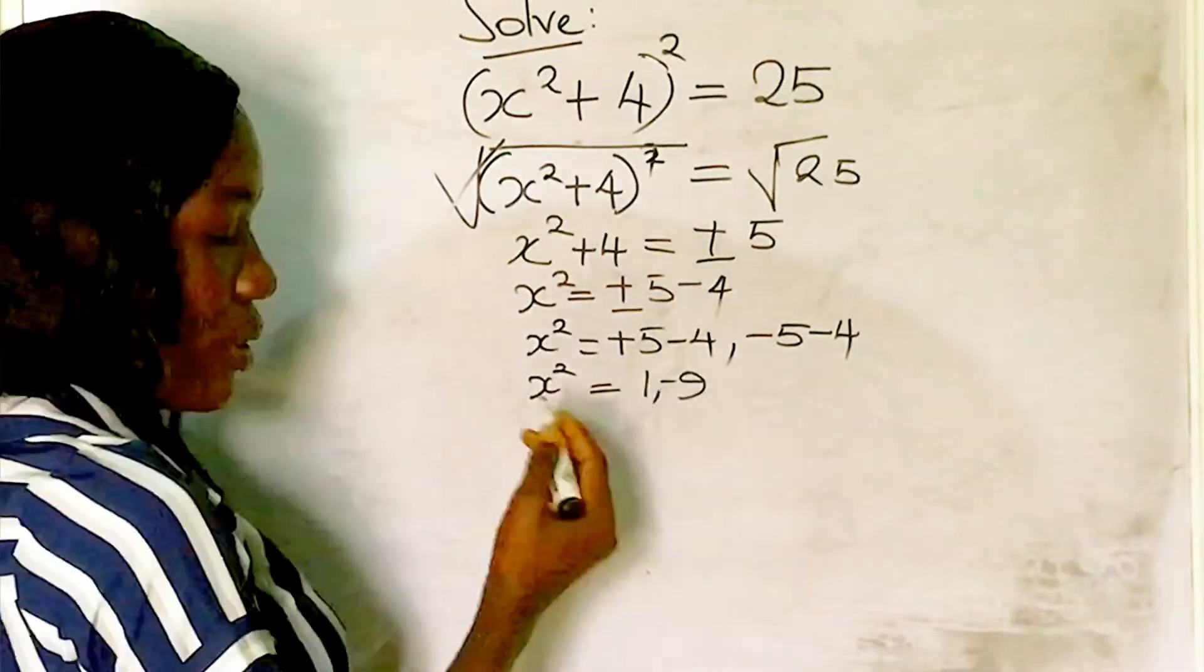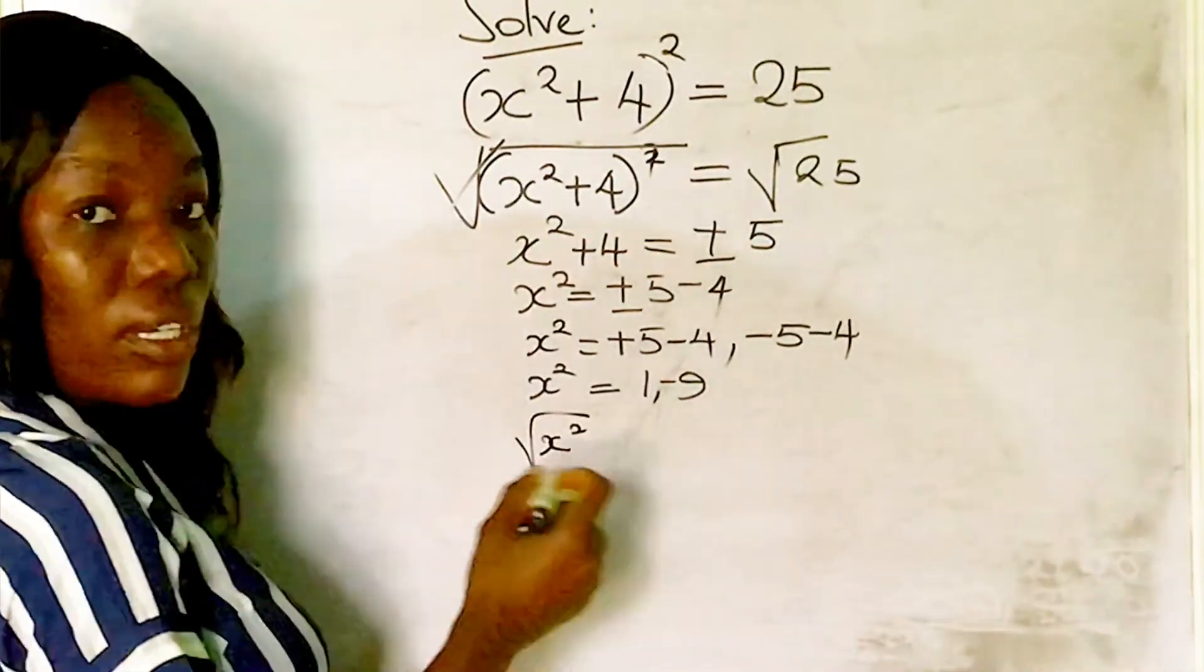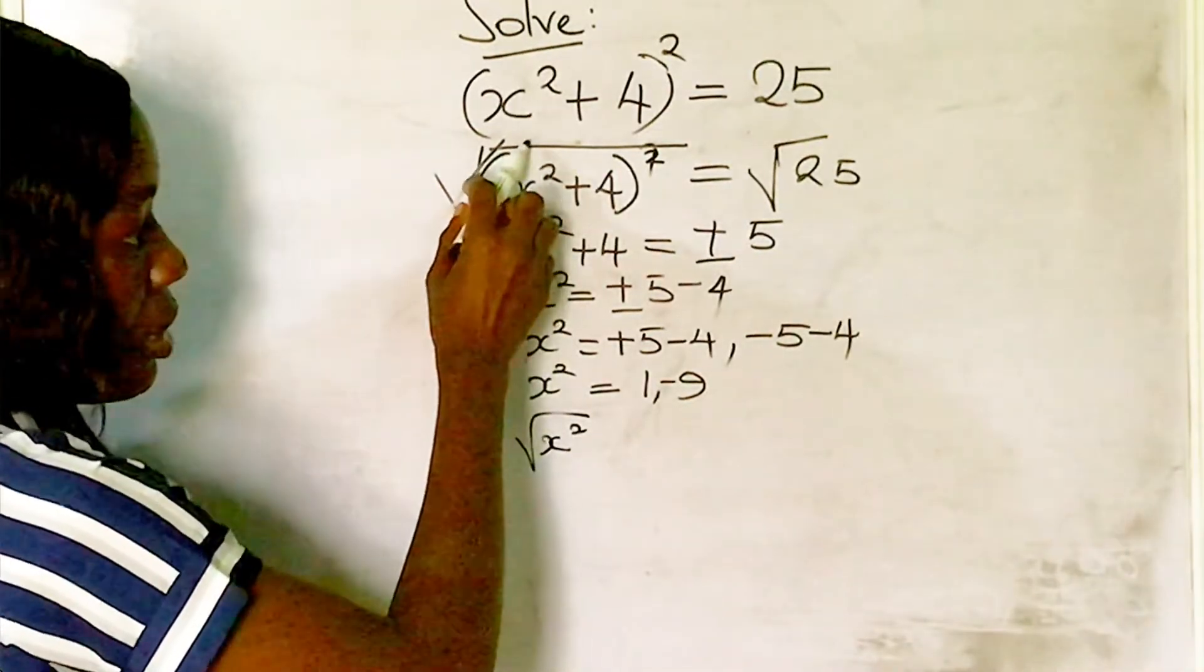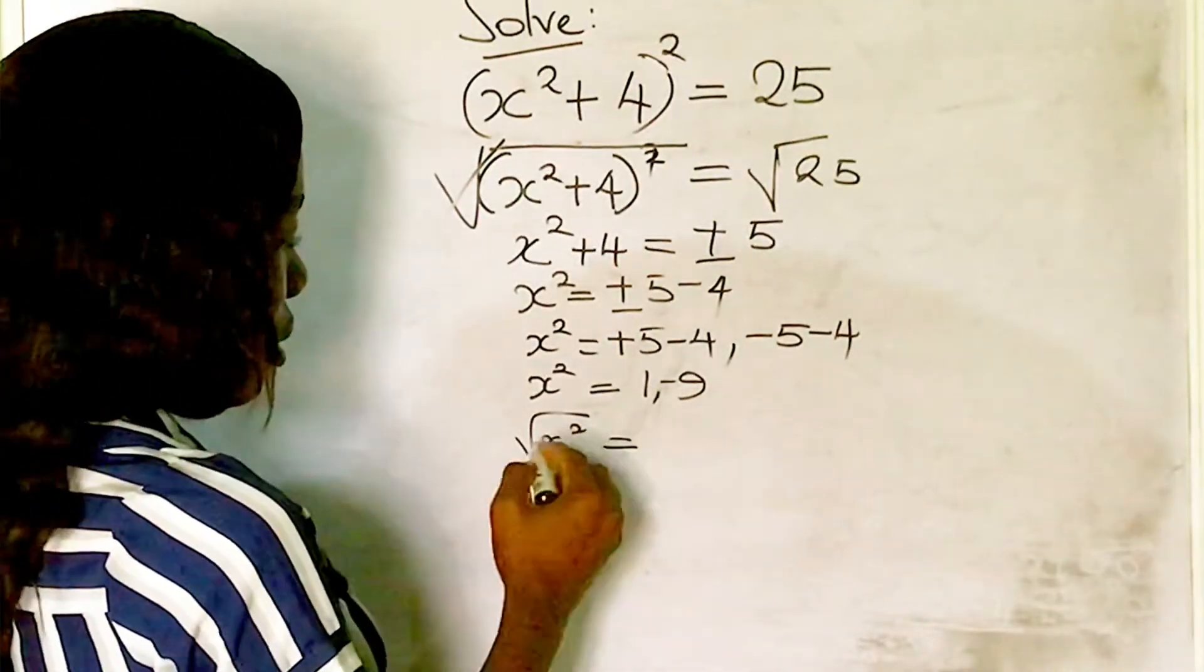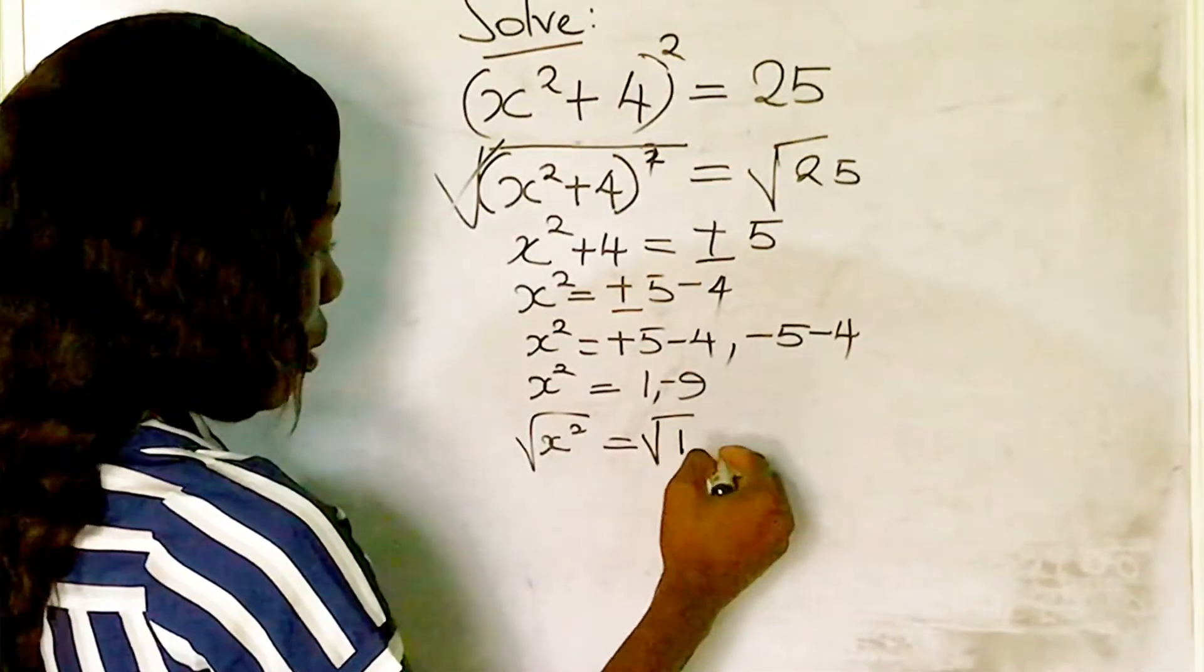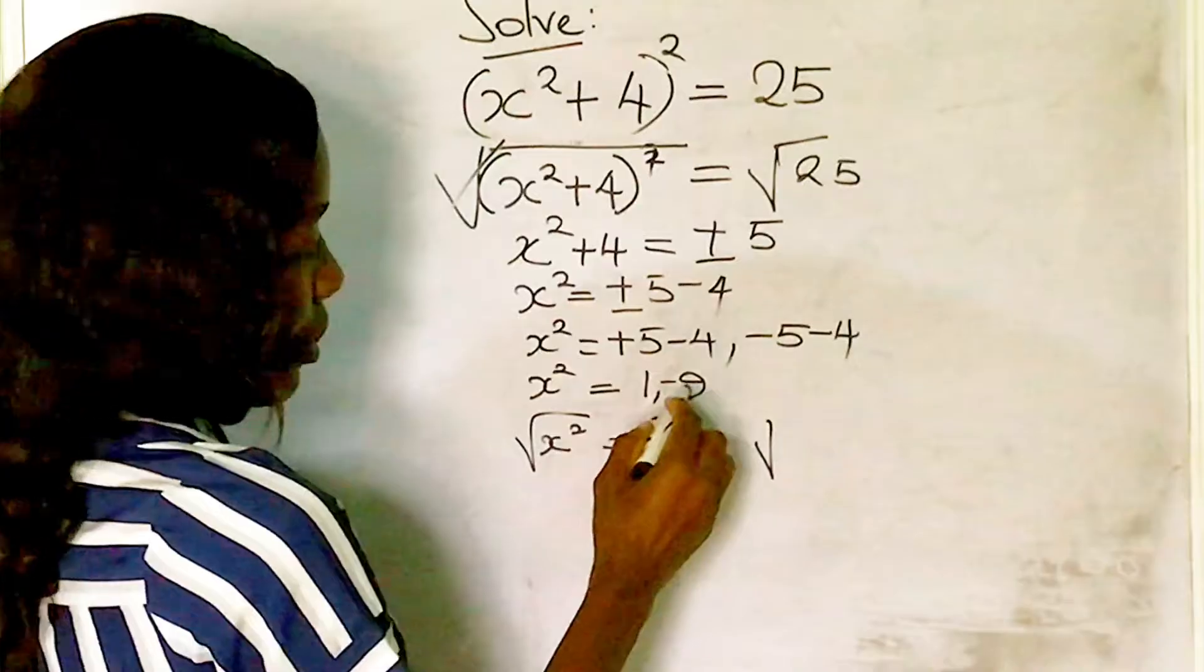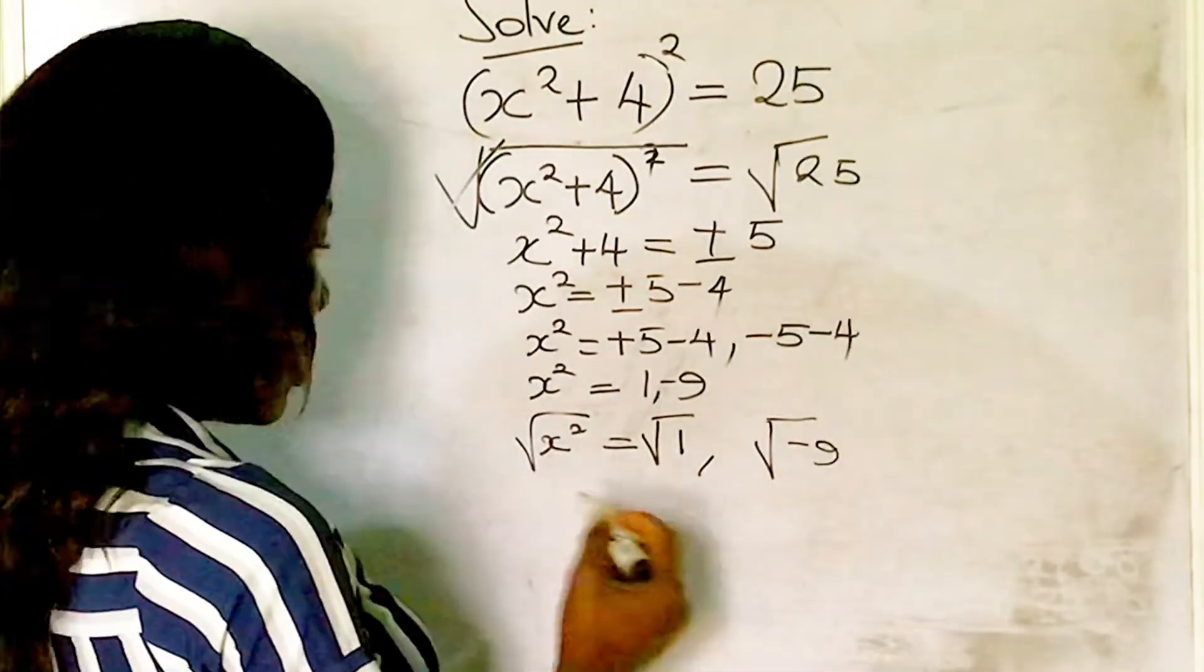We'll take the square root of both sides again. You see that here we have -9, but let's take it one step at a time.